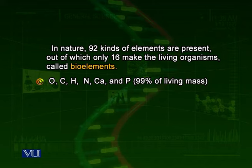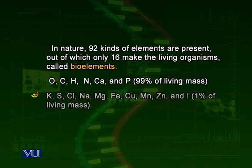The elements making up 99% of living beings are oxygen, carbon, hydrogen, nitrogen, calcium, and phosphorus. There are many others including potassium, iron, and zinc which make up another 1%. We call all of these elements the bio-elements.